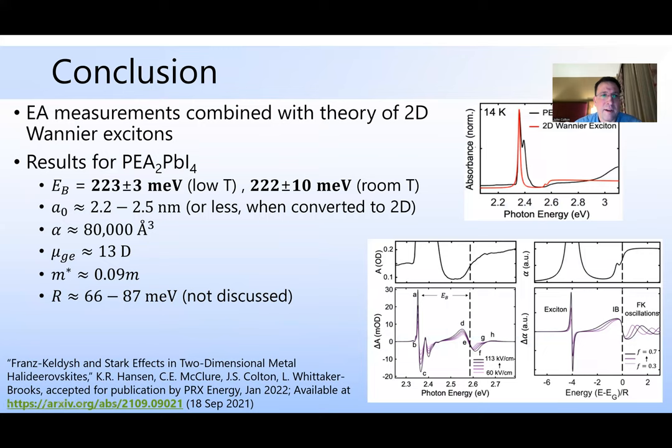So in conclusion, we have used electroabsorption combined with the theory of two-dimensional Wannier excitons to get results for PEPI, for binding energy, Bohr radius, the polarizability, the transition dipole moment, effective mass, and also the Rydberg constant, which I have not discussed. So I thank you for your attention.